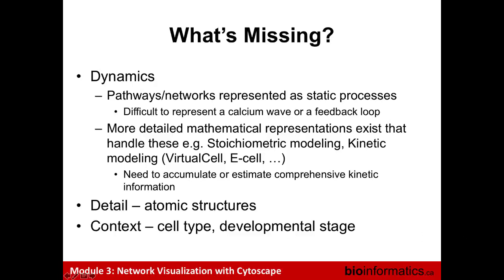Context is also missing. Usually when I see a network in biology, it's 'the network for the cell,' but it doesn't specify whether it's the network for photoreceptors in the eye or cardiomyocytes — those would probably be different networks. We can increasingly get cell type-specific network information, but most networks we get are a union of all information across all stages of development and cell types.